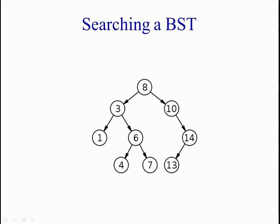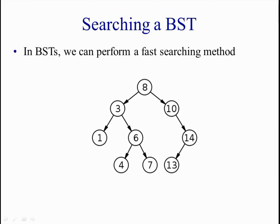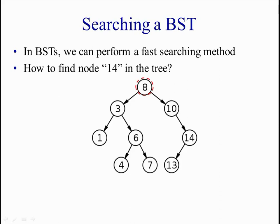What happens if I want to search for a particular node in this BST? This is actually why it's called binary search tree — because we want to use it for searching. It turns out we can perform a search in a fast way without examining all the nodes of the tree. For example, what are the steps to find the node with key value 14 in this given tree? First, we always start at the root of the tree and check if it's the value we are looking for. Is 8 equal to 14? The answer is no.